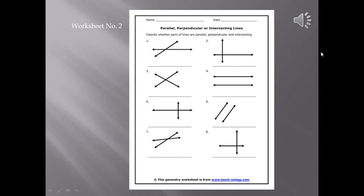That brings us to the end of today's topic. Now I am giving you some worksheets. In worksheet number 2, you have to classify the pairs of lines as parallel, perpendicular and intersecting.